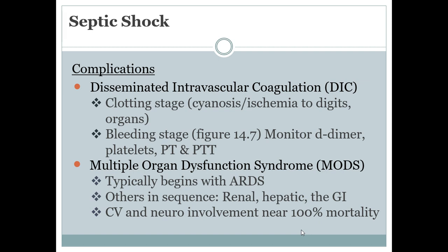Look for cyanosis and ischemia in the fingers, toes, and tip of the nose in your assessments. The bleeding stage, found on page 279, results from a lack of clotting factors — excessive bleeding due to the inability to form clots. Monitor D-dimer, platelets, PT, and PTT for lab work.